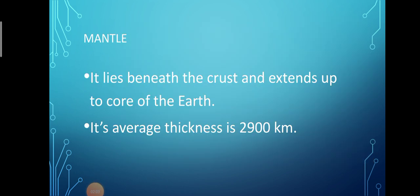The next layer is mantle. Mantle is also known as the mesosphere. It is the second layer of the earth, lying beneath the crust and extending up to the core of the earth. Mantle's average thickness is about 2900 km. The temperature of the mantle is extremely high because it contains molten magma, which comes to the surface as lava during volcanic eruptions.